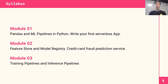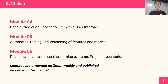In module three, we'll look at training pipelines and inference pipelines. In module four, we're going to look at user interfaces in more detail. In module five, we'll look at the MLOps aspects — automated testing and versioning of features and models. And in module six, we'll look at real-time machine learning, and we'll also present the proposals for projects.